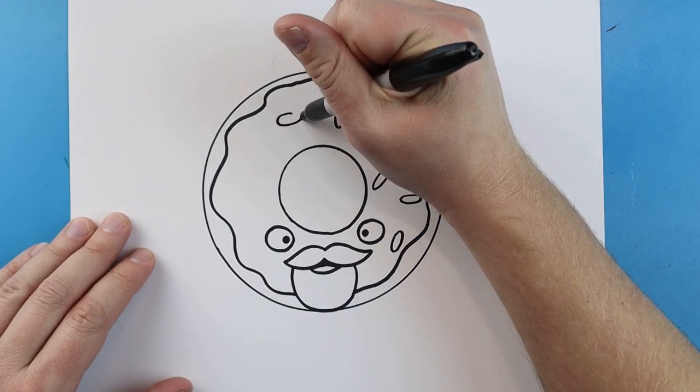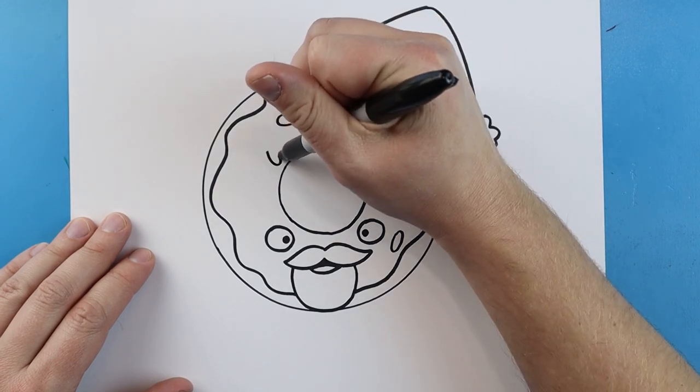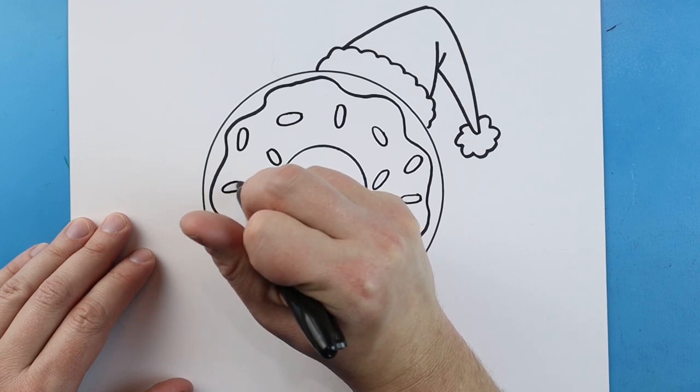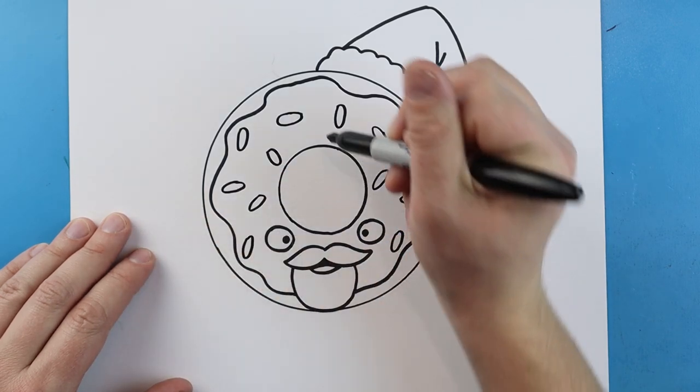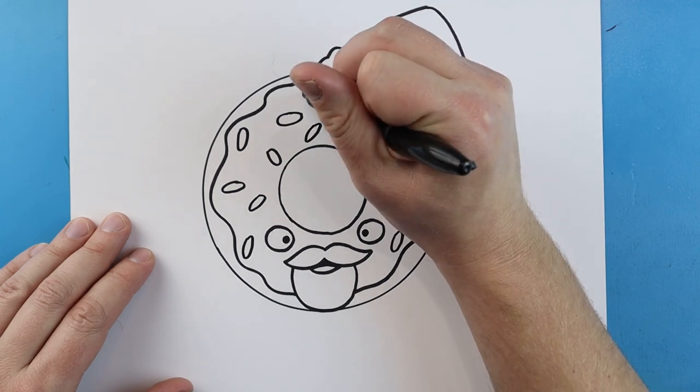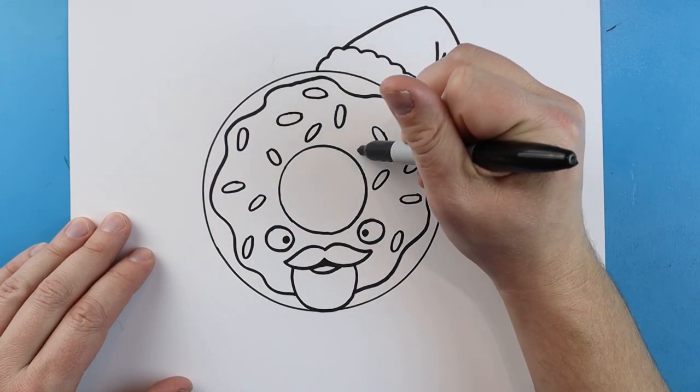We're just going to add these all over the place and we just kind of want to fill up the rest of the area with all of these different little sprinkles. Just make some little oval shapes all over here. I'm making mine a little bit bigger just so I can add lots of color inside of here.